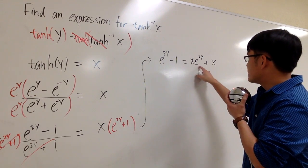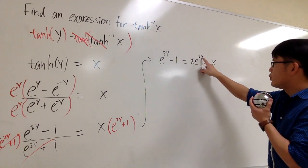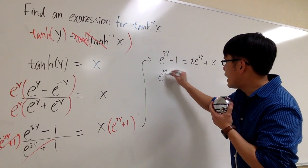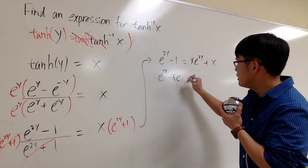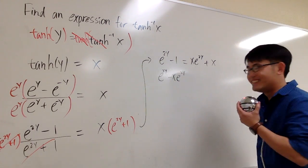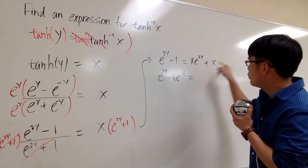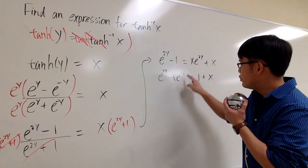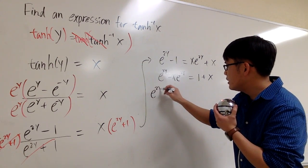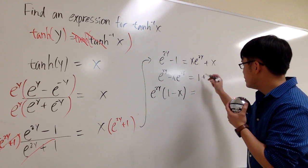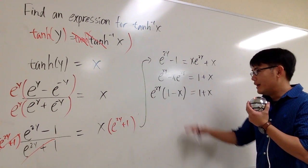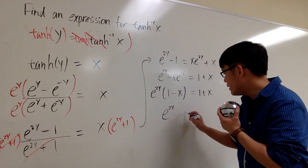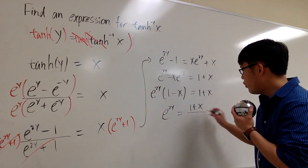Let's collect the terms with y together. We have e to the 2y on the left and x·e to the 2y on the right, so moving x·e to the 2y to the left-hand side and the −1 to the right gives e to the 2y minus x·e to the 2y equals 1 plus x. Factoring out e to the 2y on the left: e to the 2y times (1 minus x) equals 1 plus x. Dividing both sides by (1 minus x): e to the 2y equals (1 plus x) over (1 minus x).